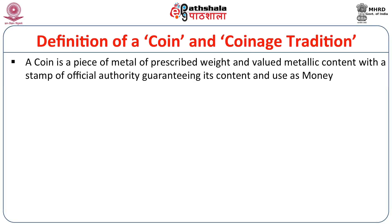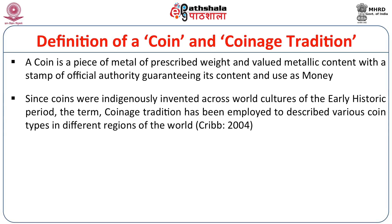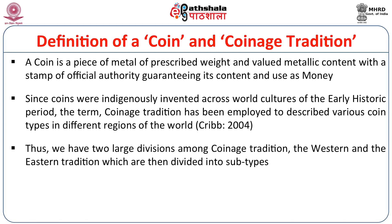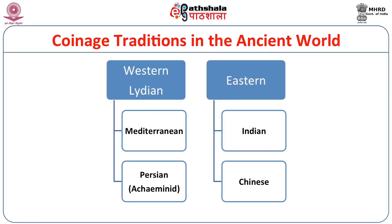What is a coin? A coin is nothing but a piece of metal of prescribed weight and metallic content with a stamp of official authority guaranteeing its content and use as money. Since coins were ingeniously invented across the world in the early historic period, various developments are termed coinage traditions — a term first used by Joe Cribb around 2004. Coinage traditions can be largely divided into Western and Eastern traditions, further subdivided into the Western tradition, the Indian tradition, and the Chinese tradition.